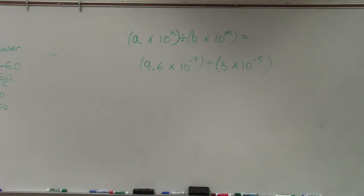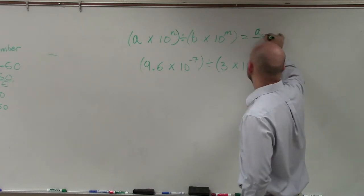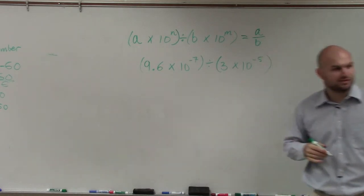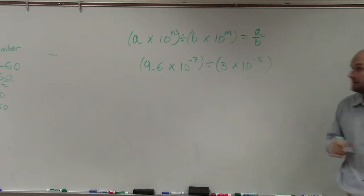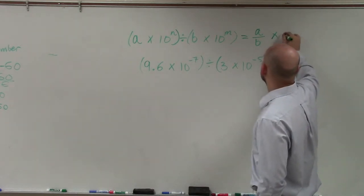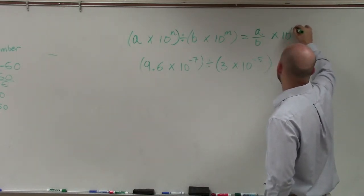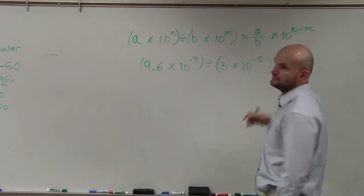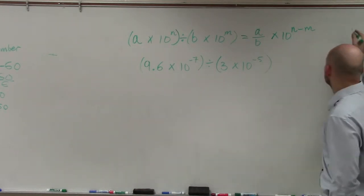When we are dividing scientific notation, ladies and gentlemen, all we're going to do, just like multiplication, is take the quotients of our a and our b. And then that's going to be times 10 to the n minus m. Remember the properties of exponents? Same thing.